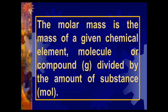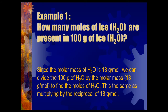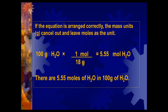So, the molar mass is the mass of a given chemical element, molecule, or compound, which is expressed in grams divided by the amount of that substance, that is, mole. Example 1: How many moles of water (H₂O) are present in 100 grams of ice/water? Since the molar mass of water is 18 g/mol, we divide 100 grams by 18 g/mol — the gram units cancel, leaving moles. 100 divided by 18 gives 5.55 moles. Therefore, there are 5.55 moles of water in 100 grams of water.